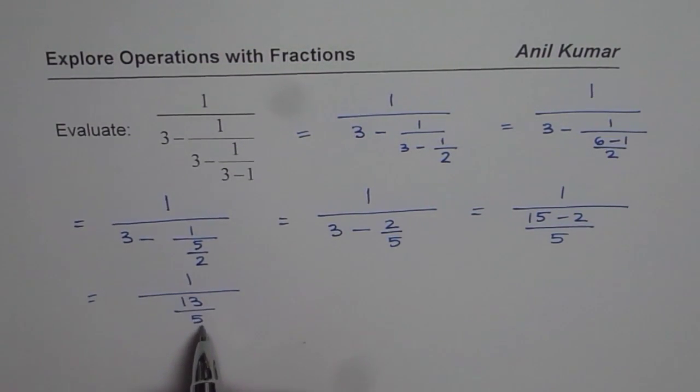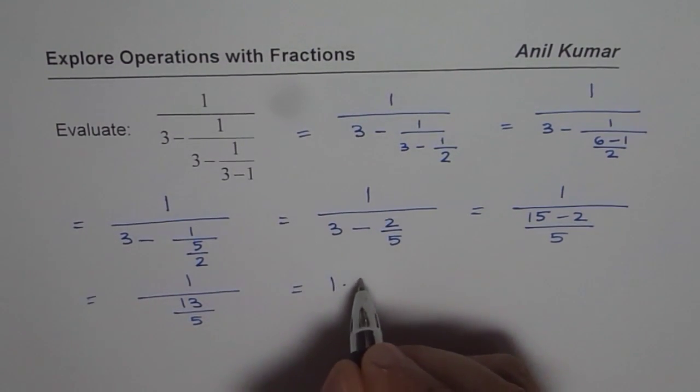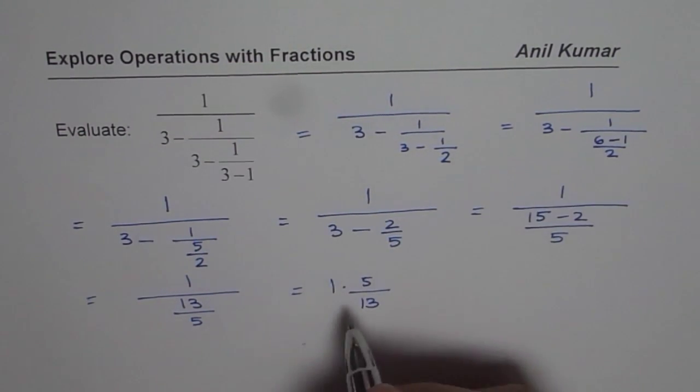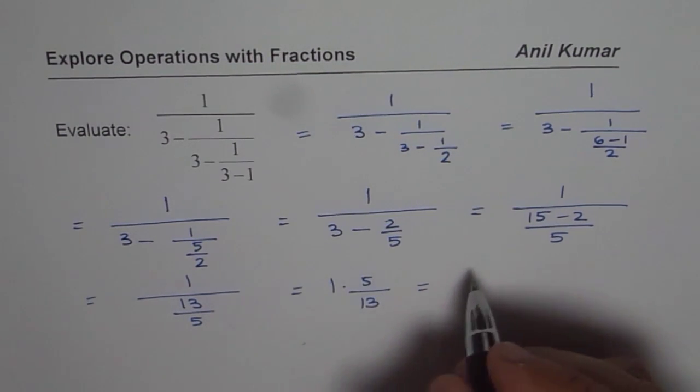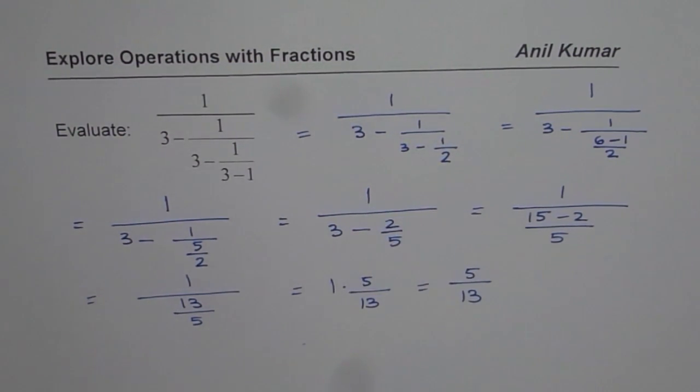So this could be written as 1 over 15 minus 2 is 13, so we get 13 over 5. So we are saying 1 divided by 13 over 5. That could be written as 1 times 5 over 13. 1 times anything is the same thing. So we get 5 over 13 as our answer for this particular fraction.